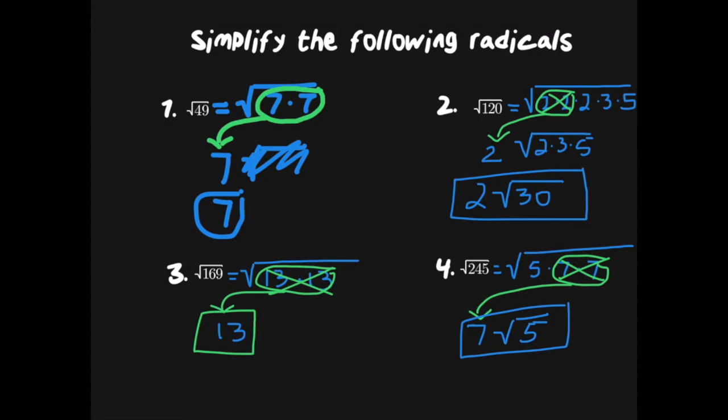This is the best way to use the TI-Nspire to simplify any kind of radical. If there are no pairs and you cannot take anything out, then there is nothing you can do and the radical remains the same.